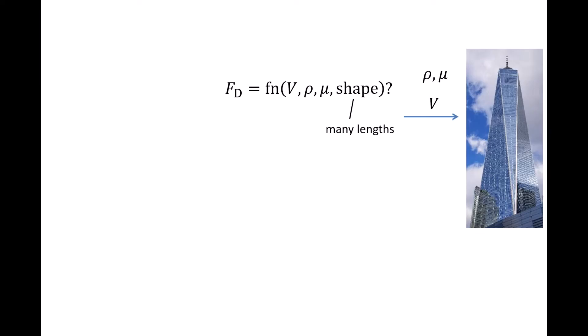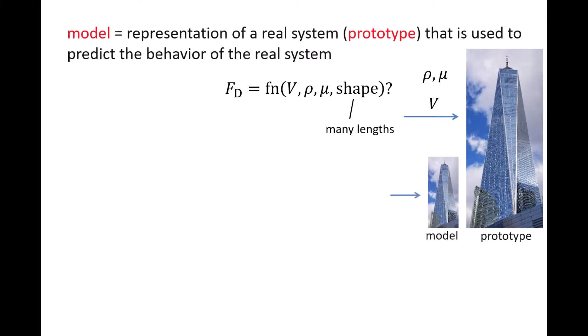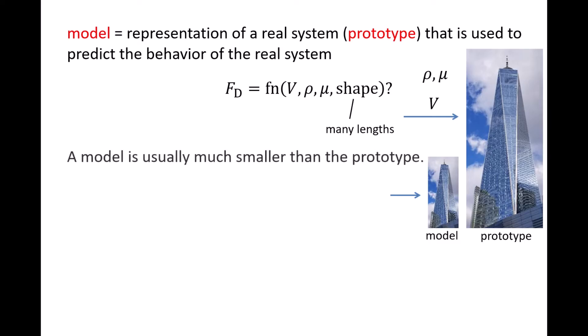A common method used by engineers to get around this problem is to study the behavior of models. A model is a representation of a real system, which is called a prototype. The behavior of the model is used to predict how the prototype will behave under specific conditions. A model is usually significantly smaller than the prototype, making them easier to handle and much cheaper to construct than a full-size prototype.